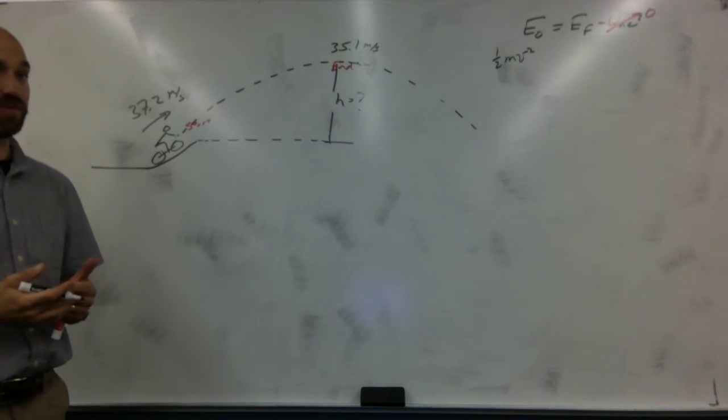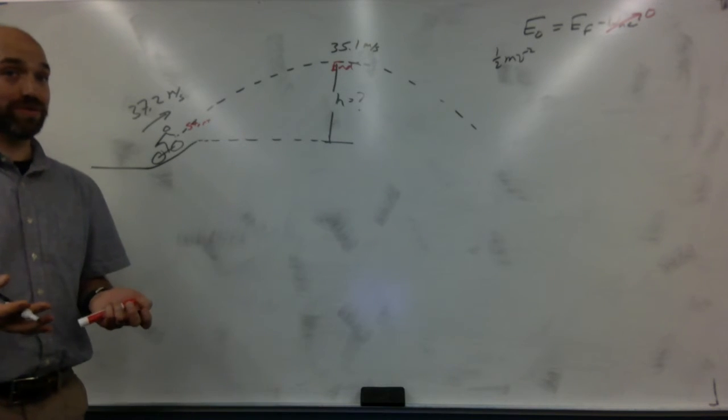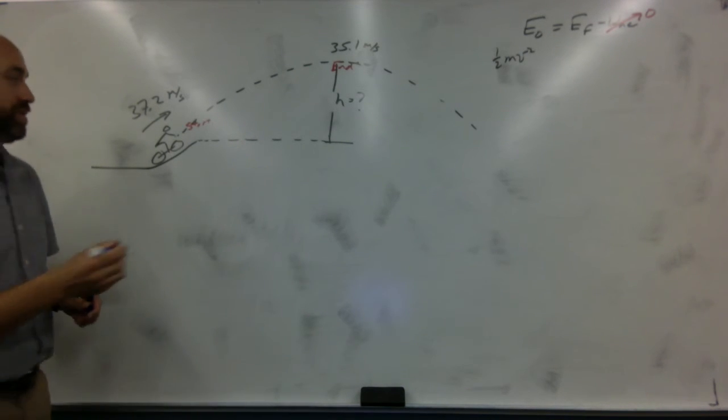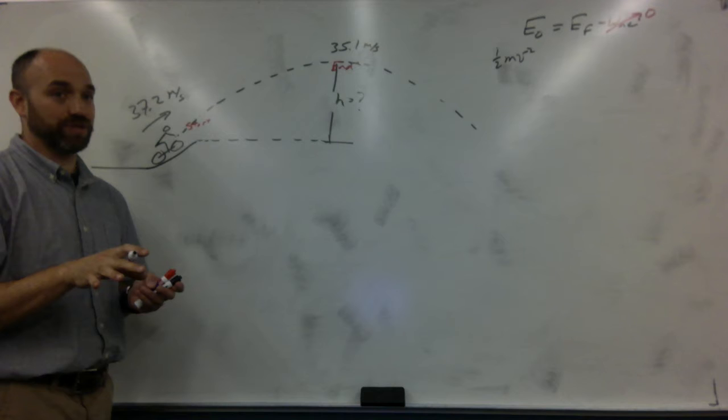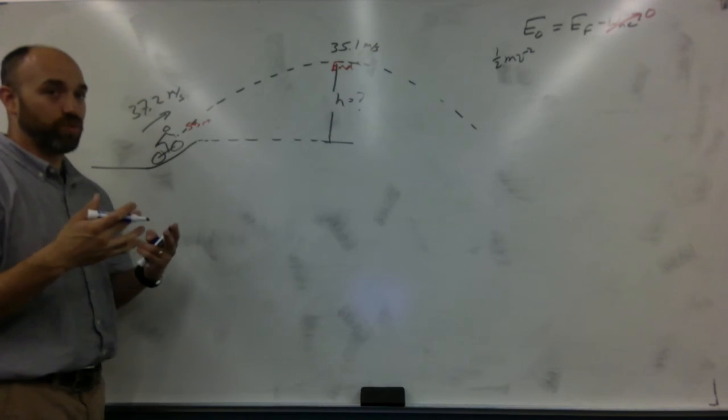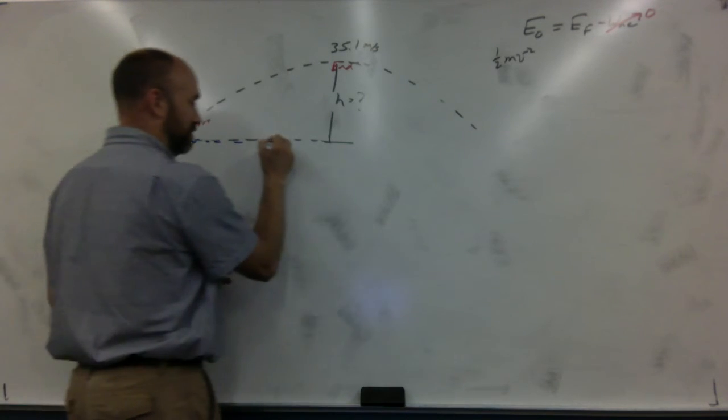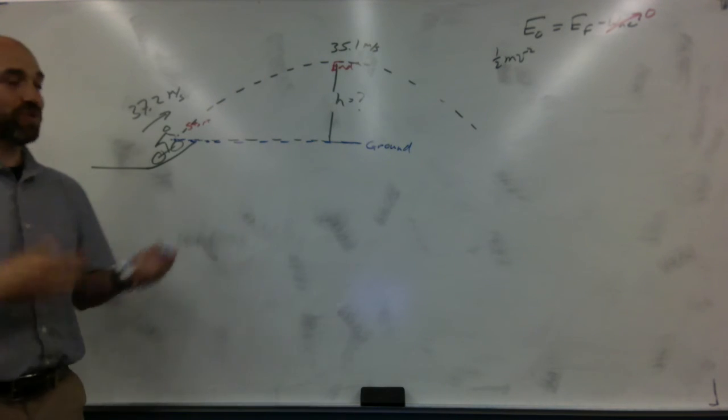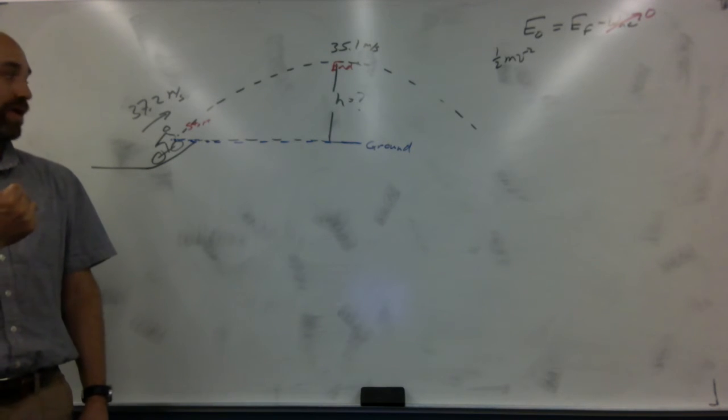Is the person off the ground? Well, this begs the question, where is the ground? And so what you need to do is define the ground for every problem. And the ground is best defined as the lowest point of any object. And since the person starts here, we'll call this the ground. And so if that's the ground, was the person off the ground? No, they're on the ground. So no potential energy. And there's no springs involved.